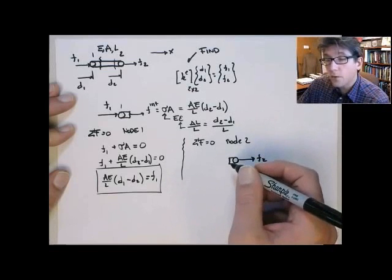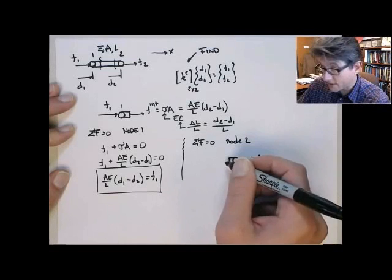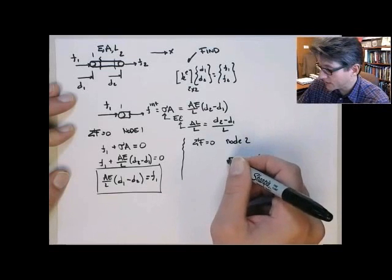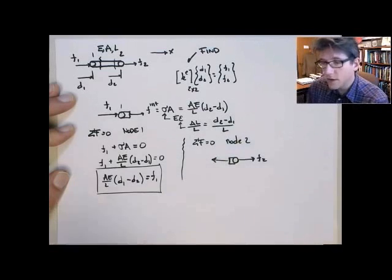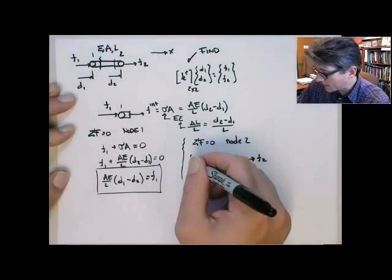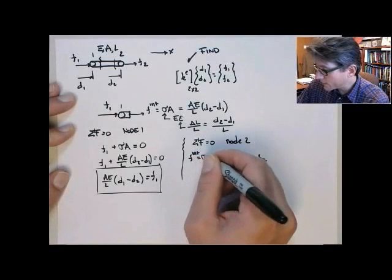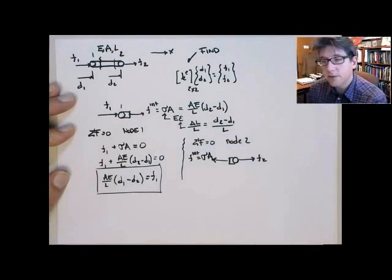Okay, so if we have a positive stress in here, a tensile stress, if this bar's in tension, the internal force is going to act to the left. So this is going to be that F internal, which is equal to the stress times the cross-sectional area.